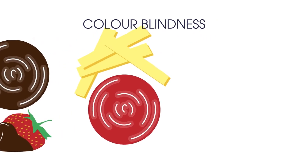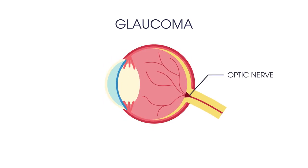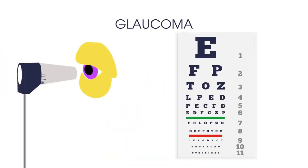The second eye condition we're going to discuss is glaucoma. This is where your optic nerve is damaged by the pressure of the fluid inside your eye. Most types of glaucoma have no symptoms, so a regular eye test is the only way to know you have the condition. It can lead to blindness if left untreated.